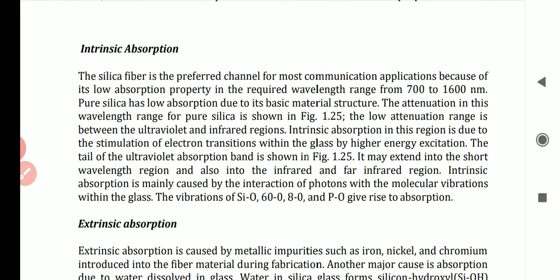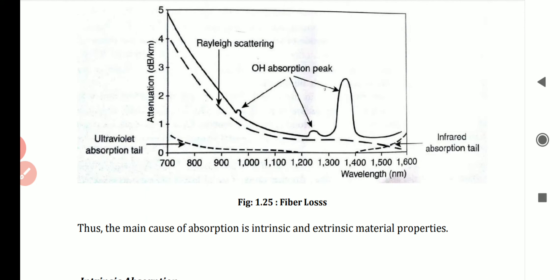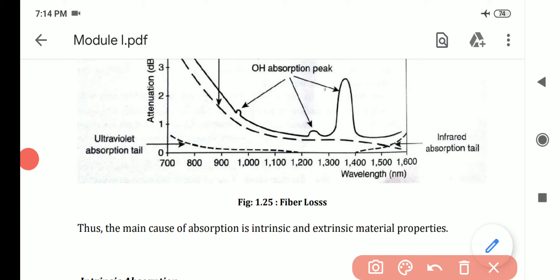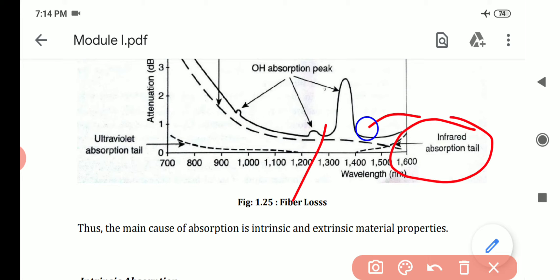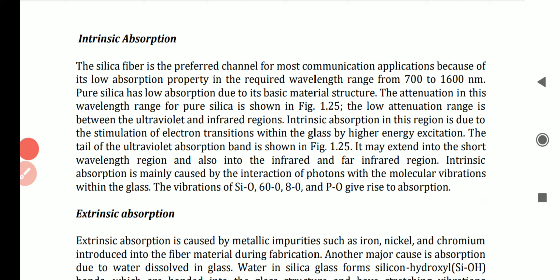The attenuation in this wavelength range for pure silica is shown in the figure. The low attenuation range is between the ultraviolet (UV) and infrared (IR) regions. In this region the absorption is very low.